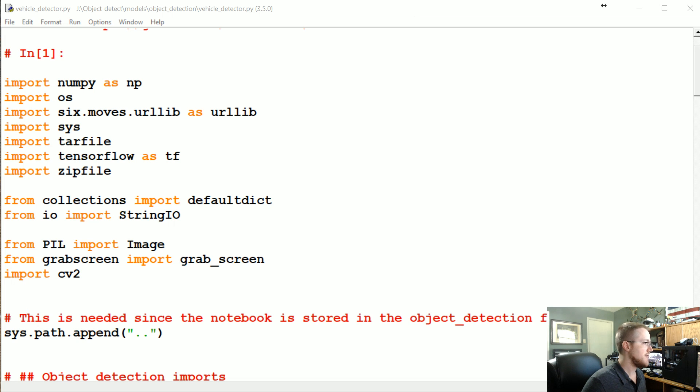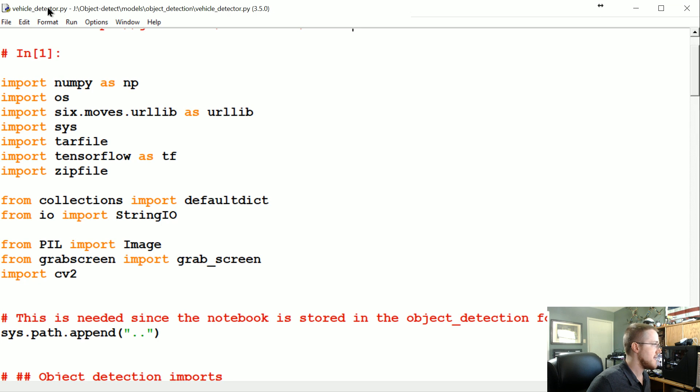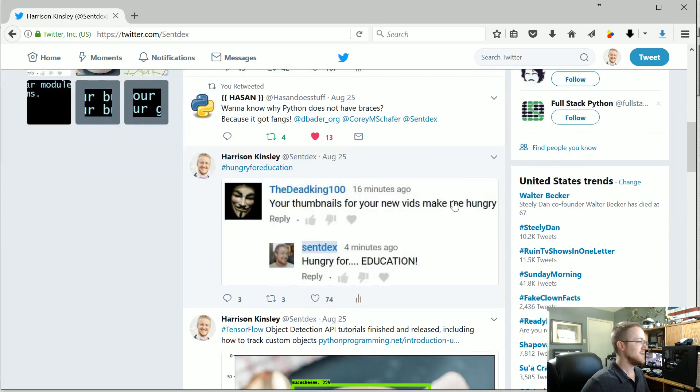A little more so than the other tutorials, you definitely are going to need Grand Theft Auto for this, but you could do some other action as long as you need to find an object and maybe press a key or press a mouse button. Another version of this was I made an aimbot using the object detection API.